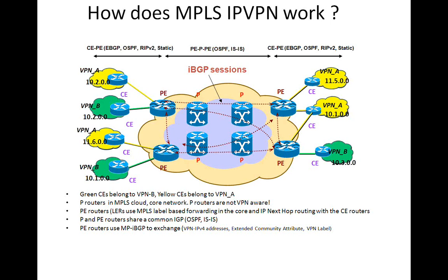Towards the left there are two yellow sites and two green sites. The yellow sites belong to the same company and the green sites belong to the same company, but they are in two different geographical locations. Assuming they are taking service from one service provider, represented by the orange cloud, all they need to worry about is having connectivity to one of the edge routers. They could be running EIGRP, OSPF, RIP, or plain static routes depending upon how big they are.